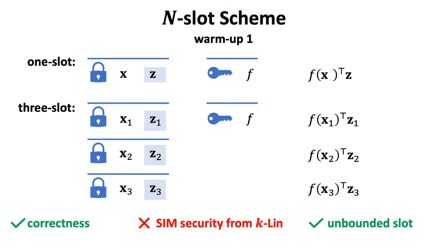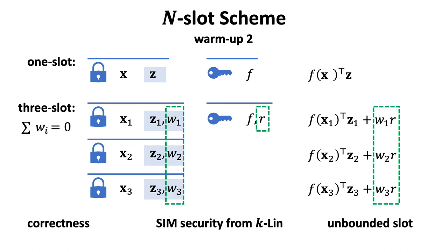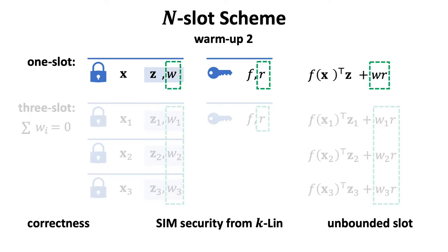To fix the issue, we introduce correlated randomness wi into sub-ciphertext i, and the randomness r in each key, so that all partial decryption results contain a mask wi times r and hide all summands. We notice that the randomness r is crucial to support unbounded collusion. For this, we need to slightly extend the basic one-slot scheme to capture the newly introduced w and r. Here, w is considered to be a secret like z, and r is public in some form. Fortunately, the function is still an arithmetic branching program.